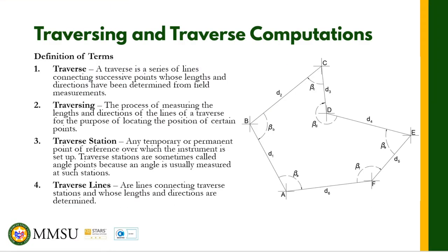We have four terms that we need to understand in traversing. Number one: traverse. A traverse is a series of lines connecting successive points whose lengths and directions have been determined from field measurements. You can see on the figure to the right, we have a traverse — these are series of lines. There are basically two types of traverse: a close traverse and an open traverse. The figure on the right shows a close traverse, because the lines connected together form a polygon — it forms a closed region inside.